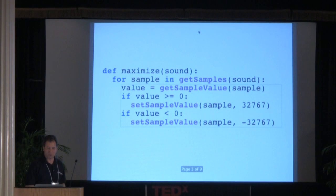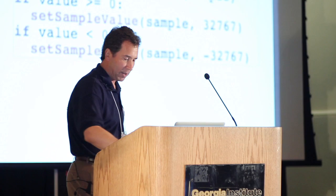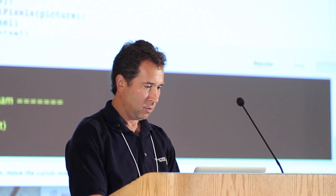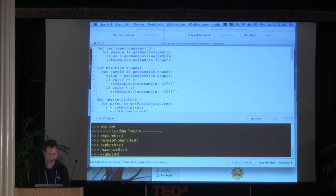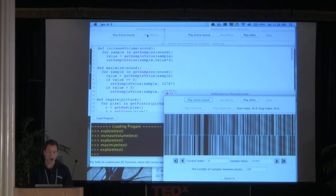Here's a piece of code that will do that. For each sample in the sounds, we're going to grab the value out. If it's at all positive, make it the highest possible value. If it's at all negative, make it the lowest possible value. So I'm going to now maximize test, explore test. This sound looks pretty radically different than the original one.